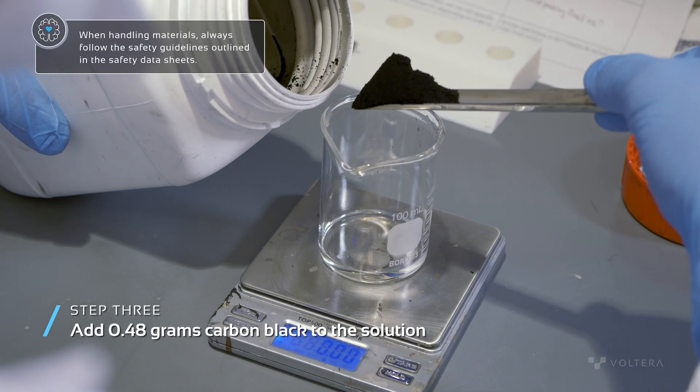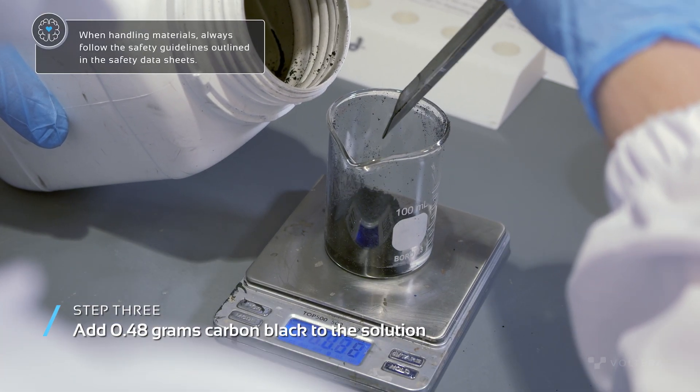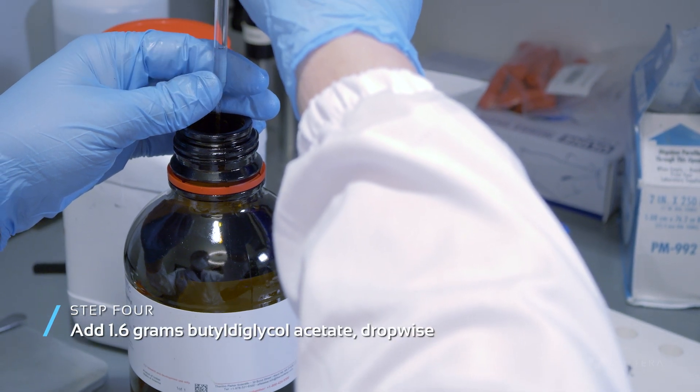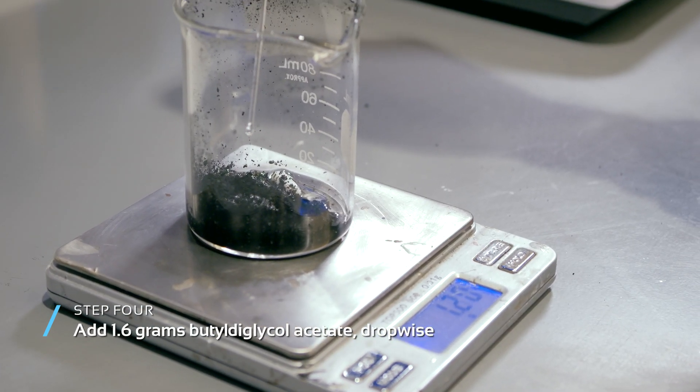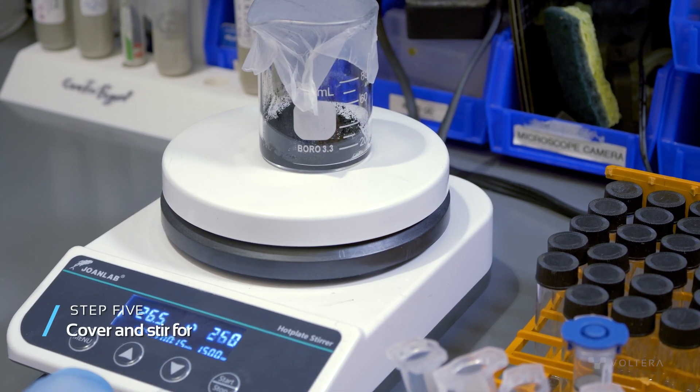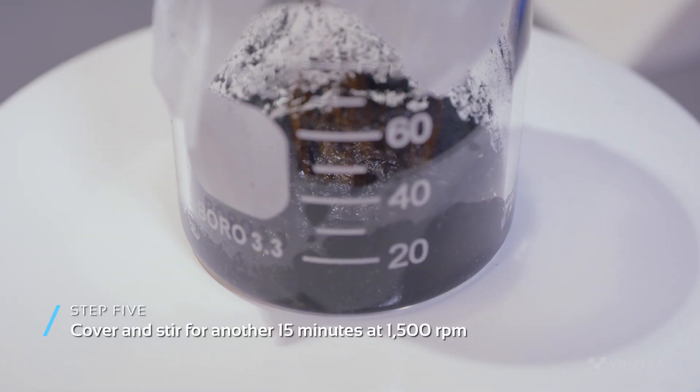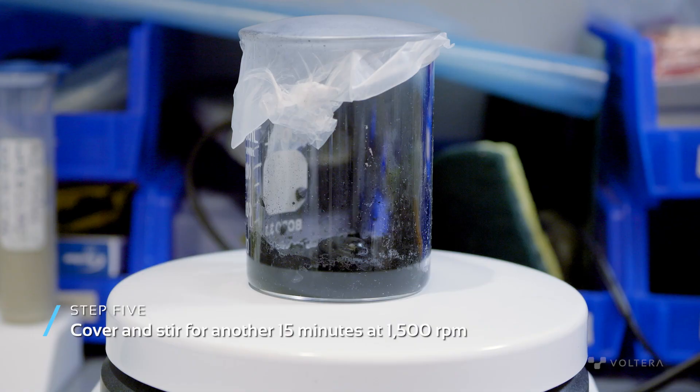Add 0.48 grams of carbon black to the solution, and then add butyldiglycol acetate dropwise until the solution appears homogenous. Once all of the alcohol has been added, cover the beaker with parafilm and stir for another 15 minutes at 1500 RPM.